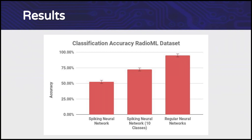Now if we look at the results: using a three-layer SNN, we were able to get an accuracy of around 50 to 55% on the full 24 modulation classes of the RadioML dataset. For only 10 classes, the performance increases to around 70 to 75%, but this is still lower than the 95 to 98% that the best regular neural networks can achieve.